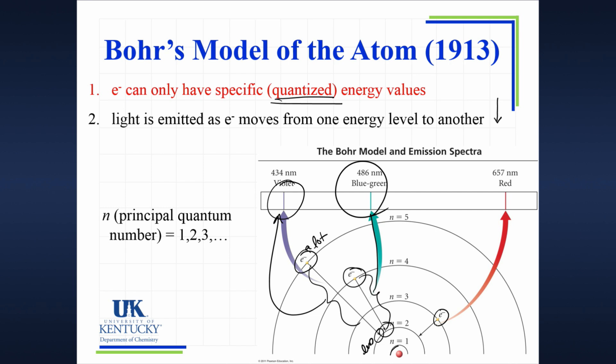And then this electron, as it goes down to the n equals 2, is just right to be getting rid of energy in that. So let's see what's on the next screen.